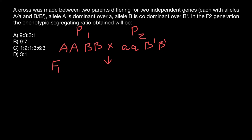The next generation after such a cross would be the F1 generation. From parent one, for gene A, the progeny can only get the capital A allele. From parent two, the progeny can only get the recessive allele a. So we know for sure that all progeny in the F1 generation are going to be heterozygous for gene A.